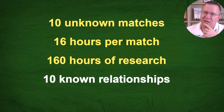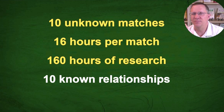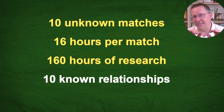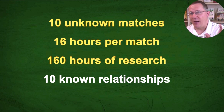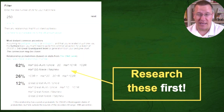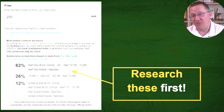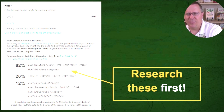Another way to look at this: let's look at it over a wide range. Say I have 10 unknown matches and I spend 16 hours for each match — so 160 hours of research total — and I've identified 10 known relationships. But what if I want to do this in a smarter way? By looking at the probabilities, there's a 62% chance that the relationship is actually one of those first five relationships. So I want to research those ones first.